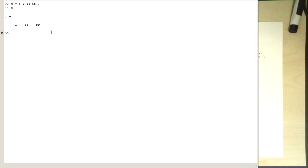And as we have just learned, in order to retrieve the vector or the content of P, we just type in P, and we're getting the values 1, 33, and 99 back.